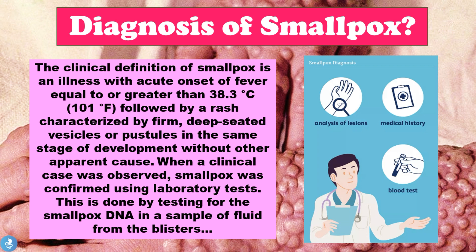Regarding the diagnosis of smallpox: the clinical definition is an illness with an acute onset of fever equal to or greater than 38.3 degrees Celsius, which is about 101 degrees Fahrenheit, followed by a distinctive skin rash characterized by firm, deep-seated vesicles or pustules in the same stage of development without other apparent cause. When a clinical case was observed, smallpox was confirmed using laboratory tests by testing for the smallpox DNA in a sample of fluid from the blisters, confirming the presence of the variola virus DNA.